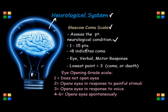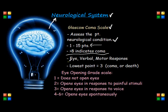The Glasgow Coma Scale works through a scoring system from 1 to 15 points. It's important to remember that a score lower than 8 indicates a coma, and therefore it's going to be a big priority for us. The Glasgow Coma Scale is based on three things: eye-opening, the motor response of the patient, and verbal response.